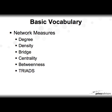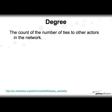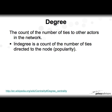Now let's look at some basic network measures, still in our fundamental vocabulary. We're going to look at six different measures. For degree: a degree is the count of the number of ties to other actors in a network. In-degree is the count of the number of ties directed to a node — we'd say popularity.